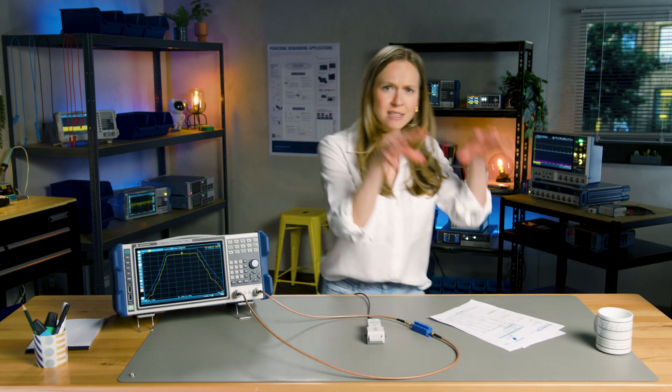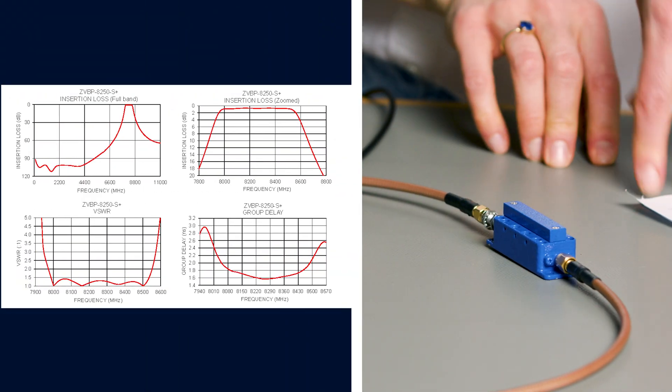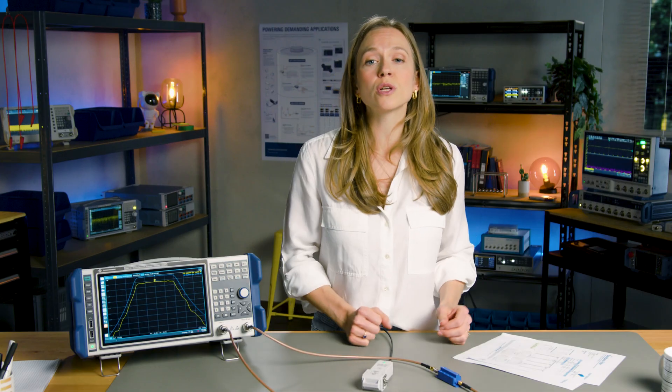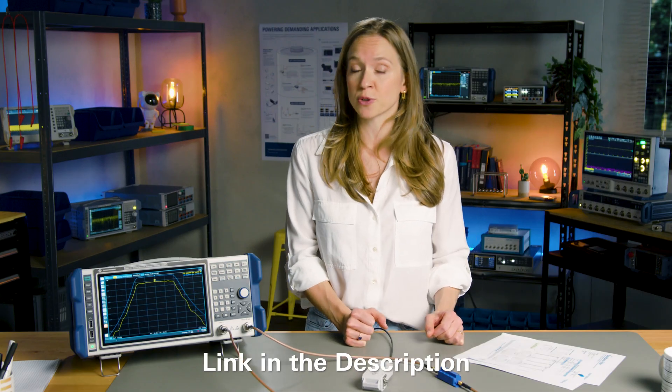First, let's take a look at the data sheet. This filter is designed to have a bandpass response centered at 8.25 GHz, and we can also download the S-parameter files for further analysis.